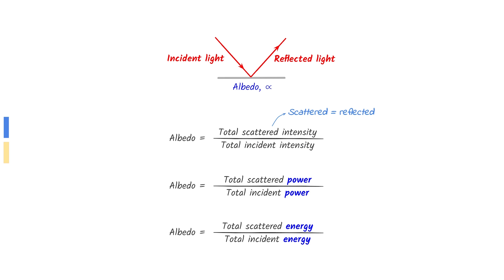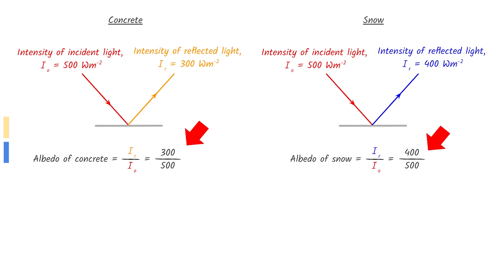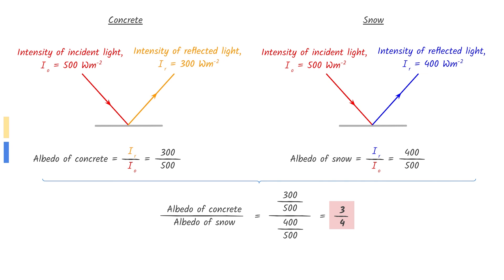Albedo is the total scattered intensity divided by the total incident intensity. Note that albedo can also be found using power or energy. Use the equation previously shown to find the albedo of concrete and snow. Put them together and do some simple calculations to find your answer.